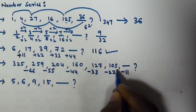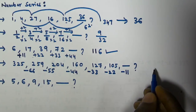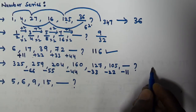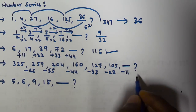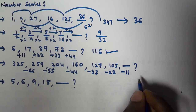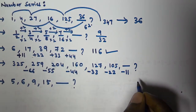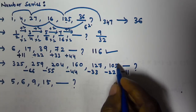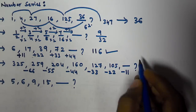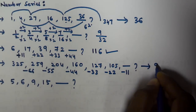So we have to subtract 11 from 105 to get the next term. 105 minus 11 equals 94. So the next term in this series is 94.